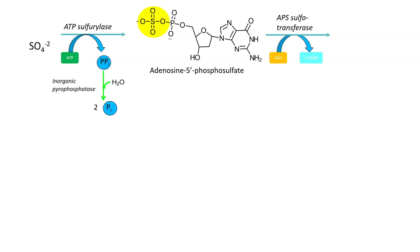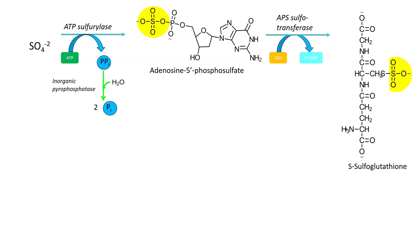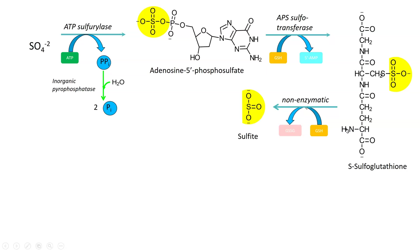Then you have ATP sulfotransferase, which takes a GSH and releases a 5-AMP. This gives you sulfoglutathione — you have a glutathione molecule with the sulfur on the outside of it. Then through a non-enzymatic process, you get the release of the sulfite.